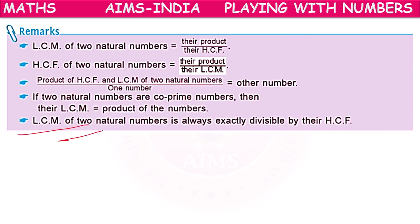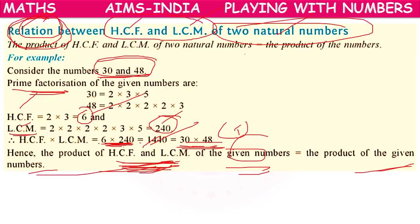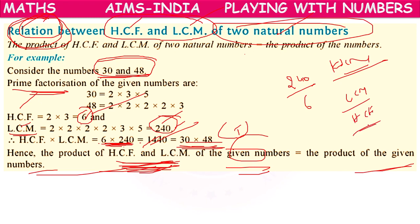The LCM of any two natural numbers is always divisible by their HCF. Here we have HCF = 6 and LCM = 240, and 240 is divisible by 6. So the LCM is always divisible by HCF — or in other words, HCF is a factor of LCM.